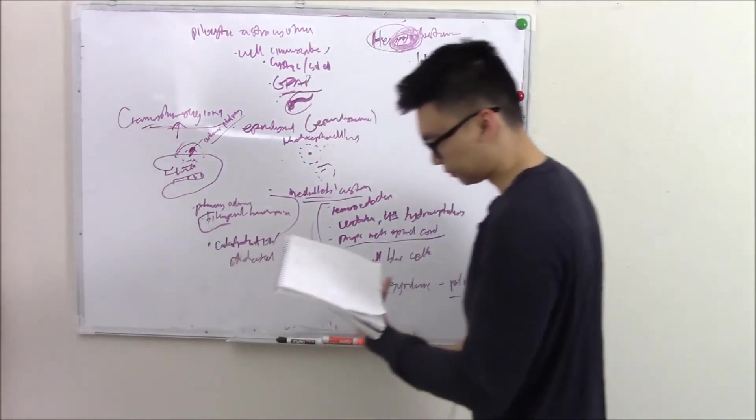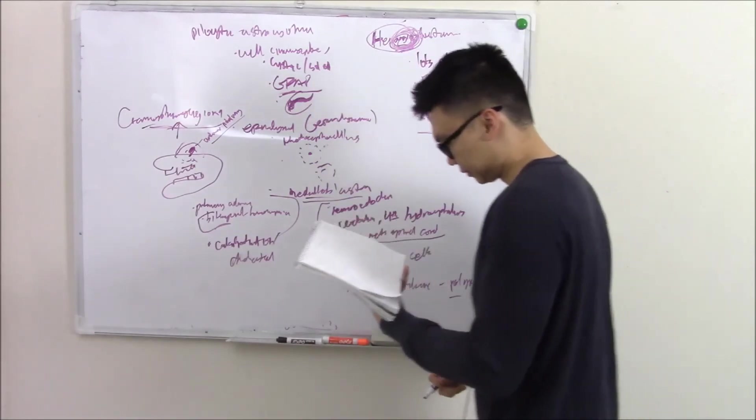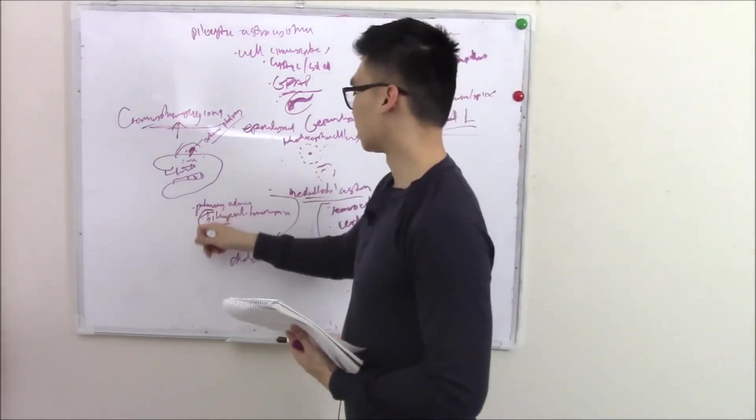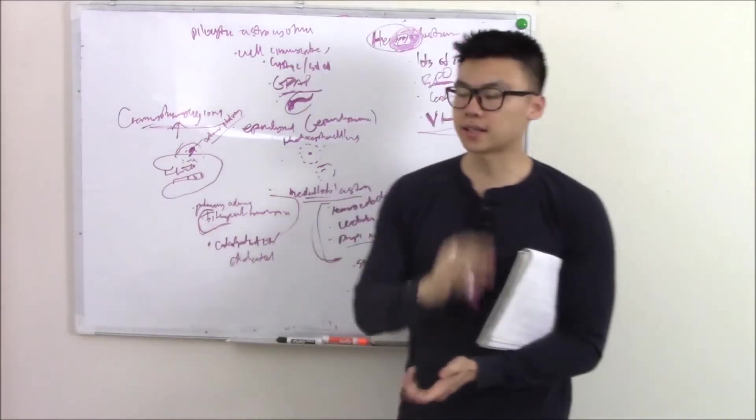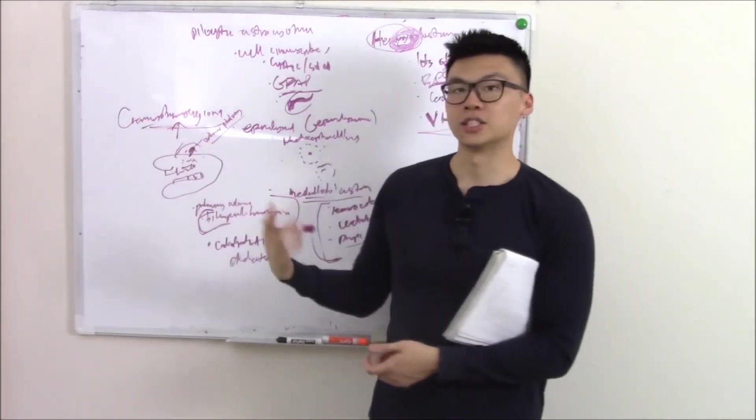So bitemporal is one of the biggest signs in adults, you're thinking pituitary adenoma. And kids don't think that. Think craniopharyngioma. One last one and we'll all be done.